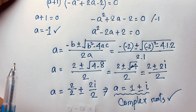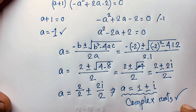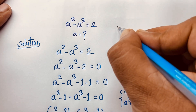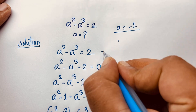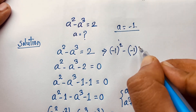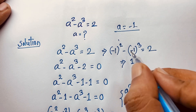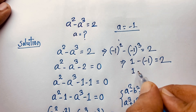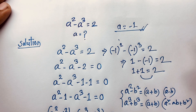So we find 3 roots in total: a = −1, a = 1 + i, and a = 1 − i. Let's verify the real solution a = −1 in the original equation: (−1)² − (−1)³ = 1 − (−1) = 1 + 1 = 2. Left-hand side equals right-hand side, so a = −1 is confirmed as the real answer.